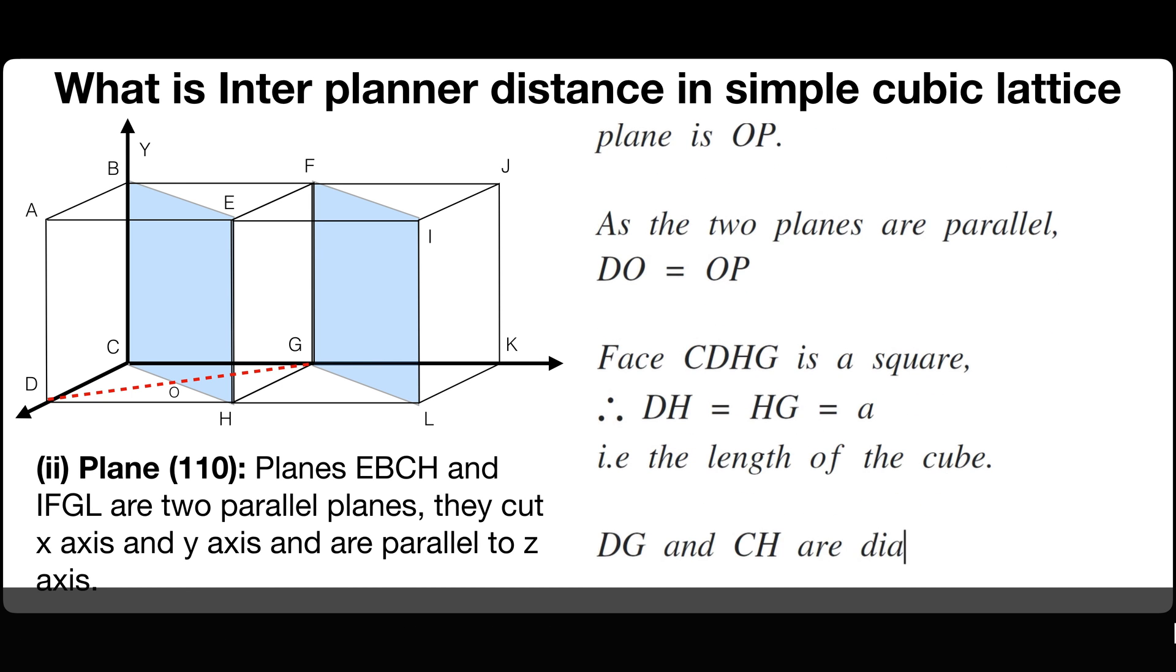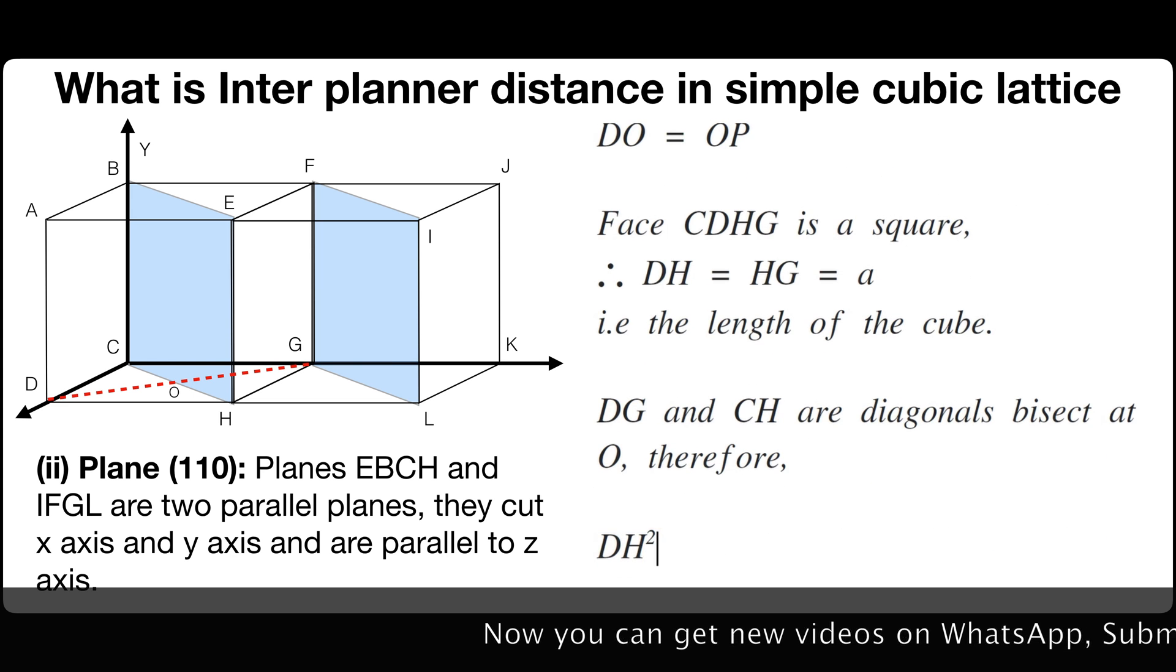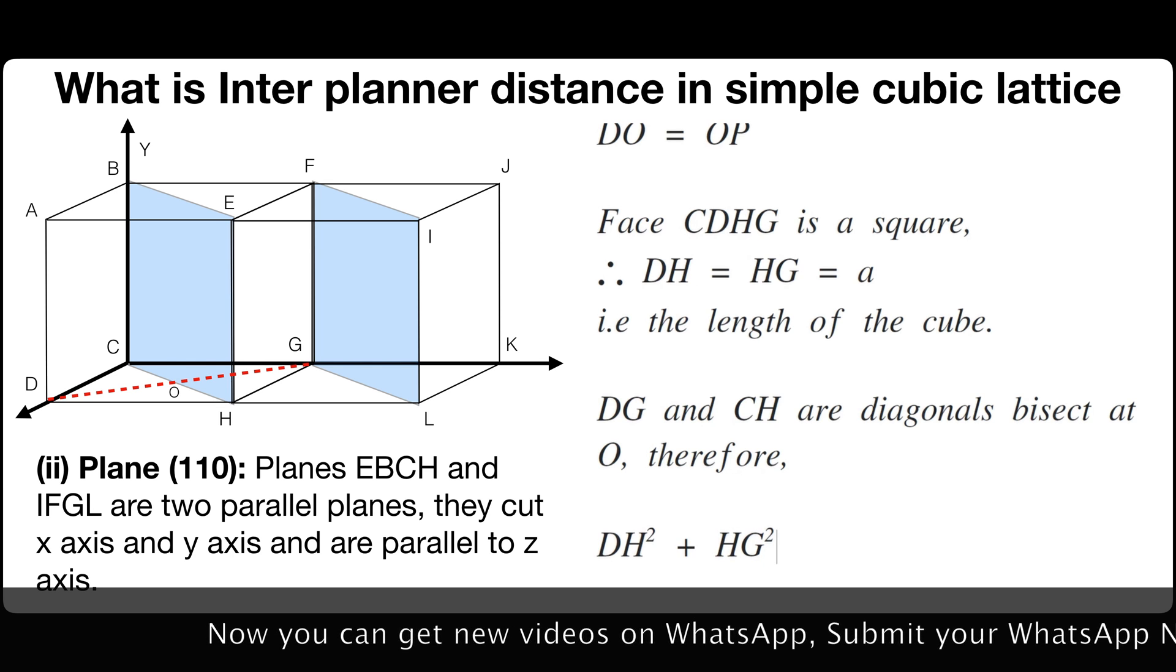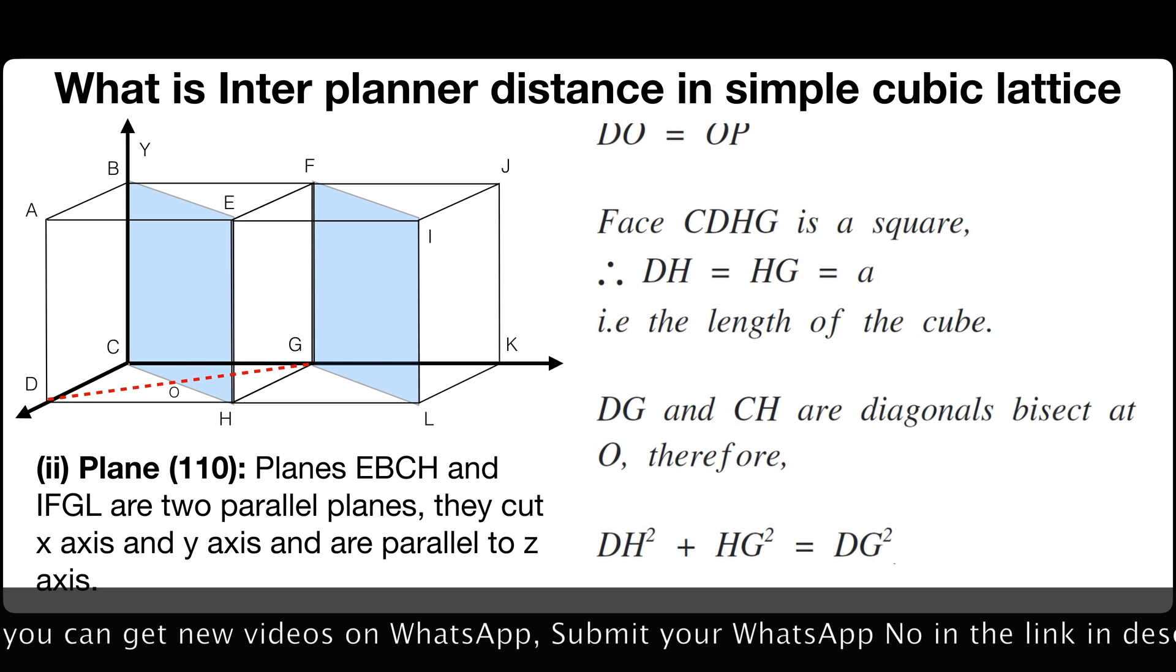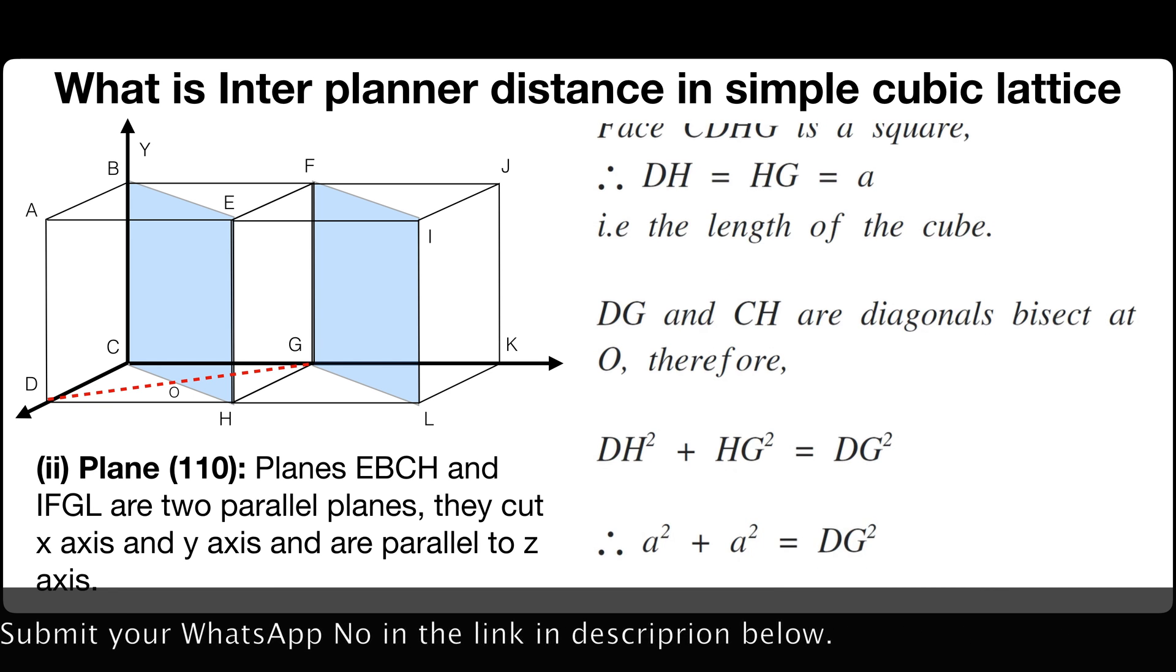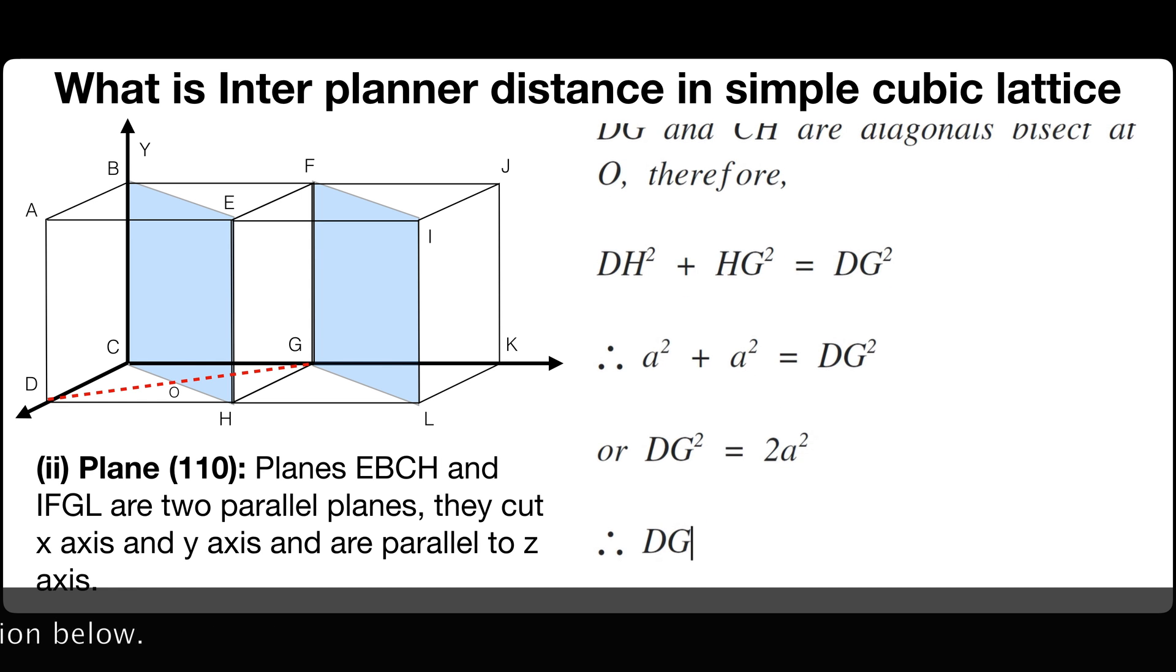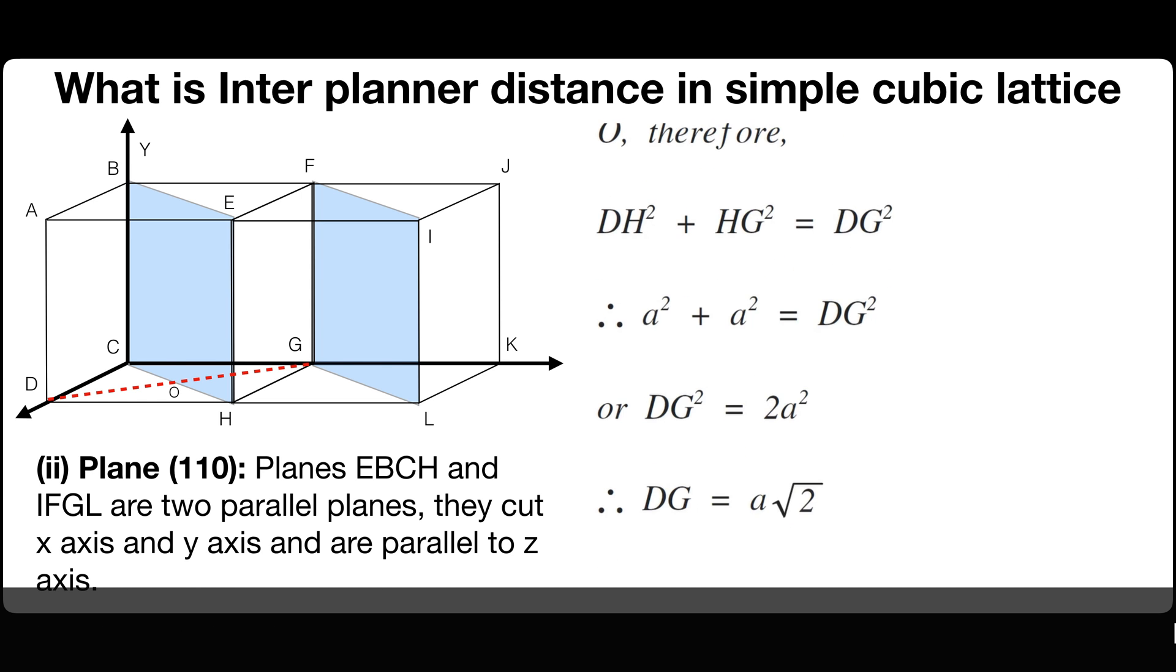DG and CH are diagonals bisect at O. Therefore, DH square plus HG square is equals to DG square. That is A square plus A square is equals to DG square or DG square is equals to 2A square. Therefore, DG is equals to A square root of 2.